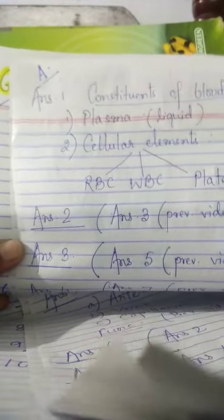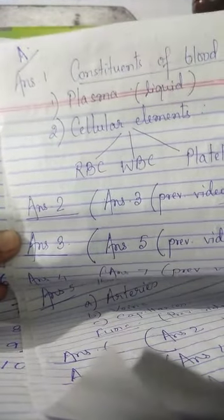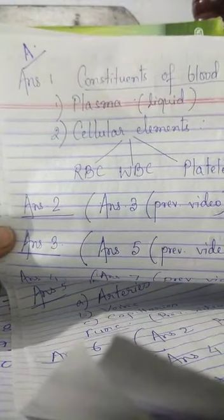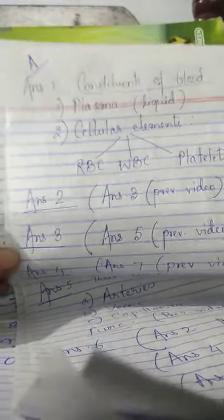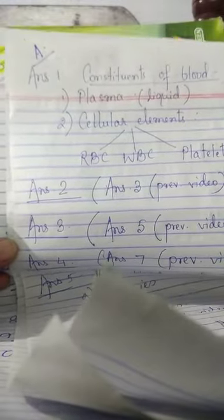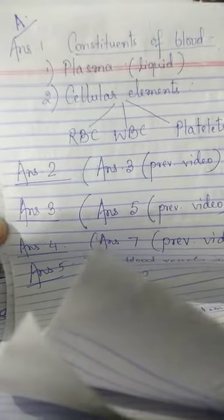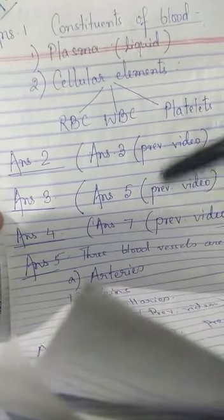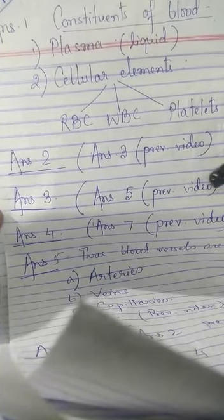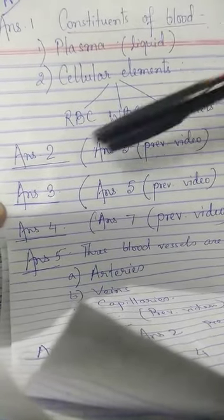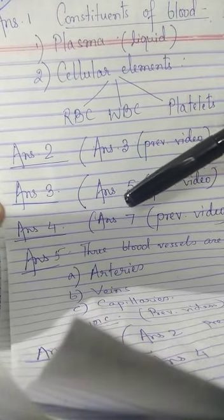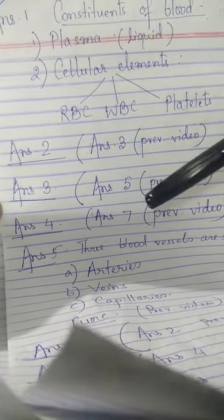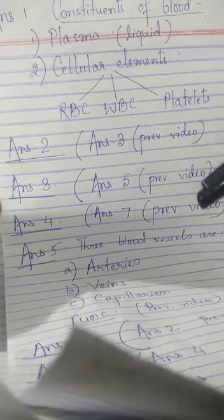In your book, answer number two is the same as answer three which I have discussed in the previous video. Answer number three is the same as answer number five from the previous video. Answer number four is the same as answer number seven which I had discussed in the previous video.